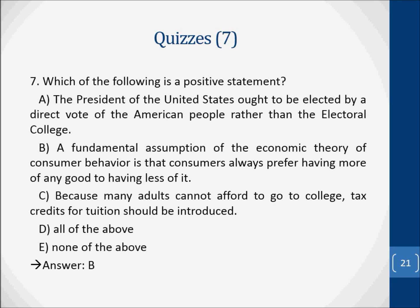Question seven: which of the following is a positive statement? A. The President of the United States ought to be elected by a direct vote of the American people rather than the electoral college. B. A fundamental assumption of the economic theory of consumer behavior is that consumers always prefer having more of any good to having less of it. C. Because many adults cannot afford to go to college, tax credits for tuition should be introduced. D. All of the above or none of the above. The answer is B — that consumers always prefer having more of any good to having less is a positive statement.